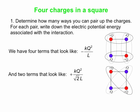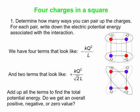The net potential energy is four negative terms and two positive terms. The negative overall wins, which means there's more attraction than repulsion in this system. Note that each positive term, kQ²/(√2L), is smaller in magnitude than each negative term, kQ²/L. So overall, the total energy is negative.